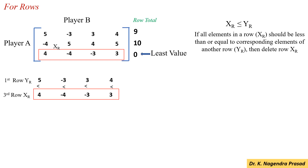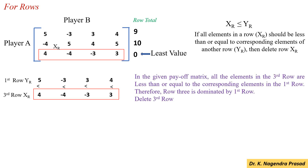Here, 4 is less than 5, minus 4 is less than minus 3, minus 3 is less than 3, and 3 is less than 4. So, the condition is satisfied.